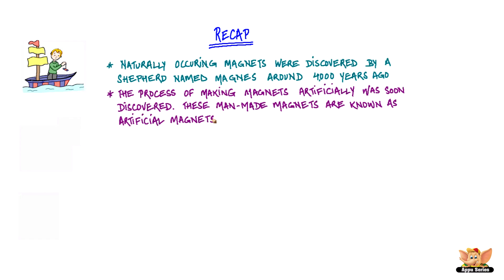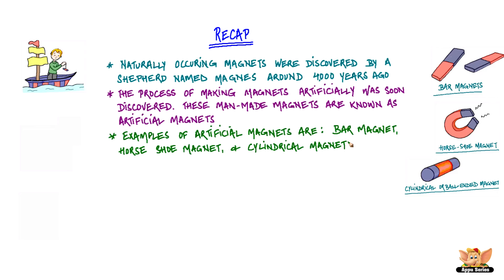The process of making magnets artificially was soon discovered. These man-made magnets are known as artificial magnets. Examples of artificial magnets are bar magnet, horseshoe magnet, and cylindrical magnet.